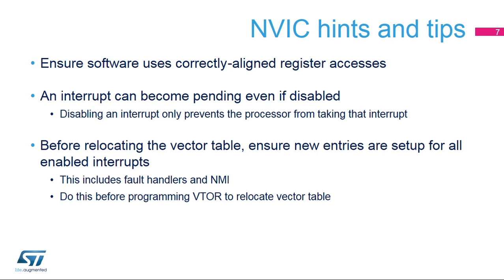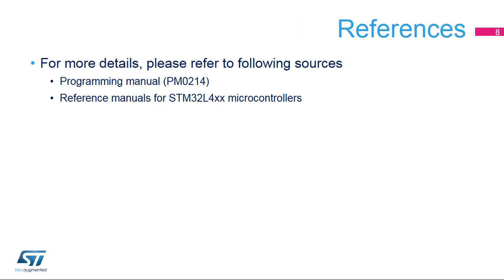Make sure the related interrupt flag is cleared before enabling the interrupt vector. Before relocating the vector table using the VTOR register, ensure fault handlers, NMI, and all enabled interrupts are correctly set up on the new location. For detailed information, please refer mainly to Programming Manual PM0214.